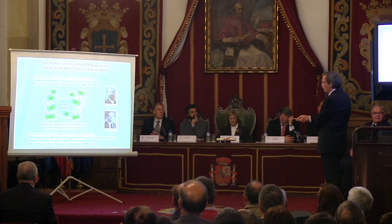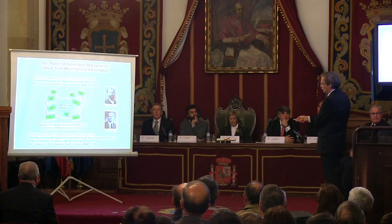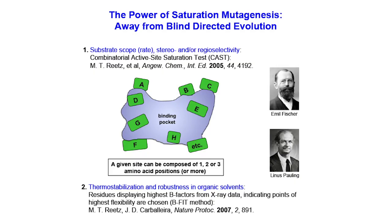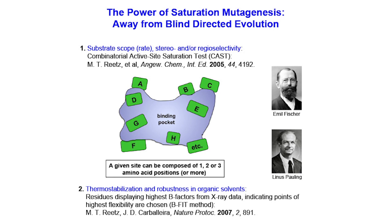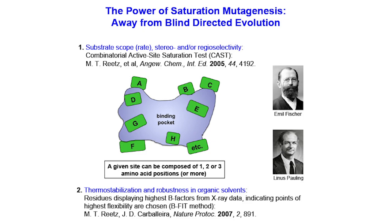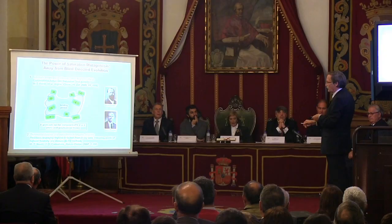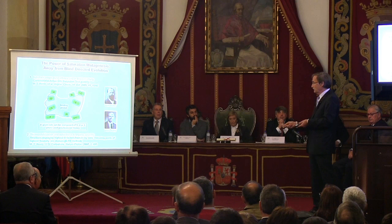Today we call this the power of saturation mutagenesis — away from blind directed evolution. If you go through this now, you will say it's so logical — why didn't we do this in the first place? Well, that's how science is — you're not always as smart as you could be. We generalized an idea we had already published years before. Here you see the binding pocket, reminiscent of Emil Fischer's lock and key principle. We have different sites A, B, C, D — and this is where we have criteria for deciding where we should randomize and focus our mutagenesis.